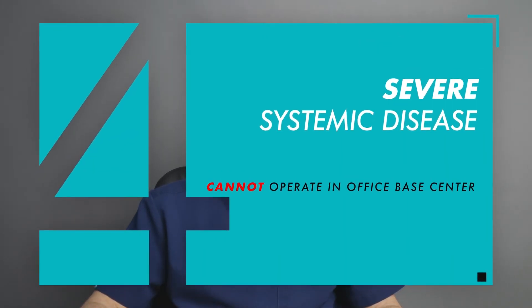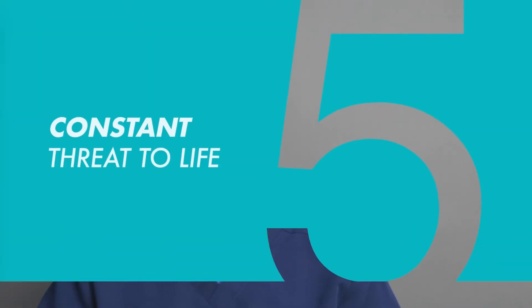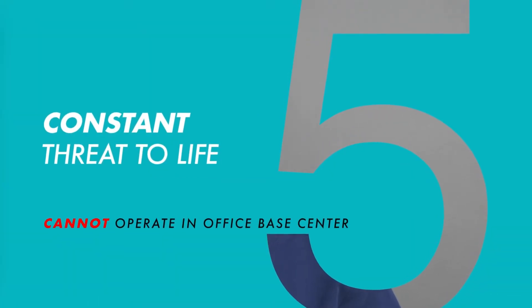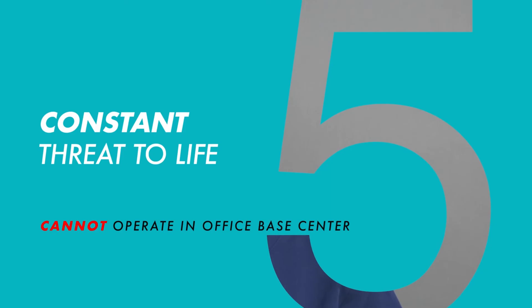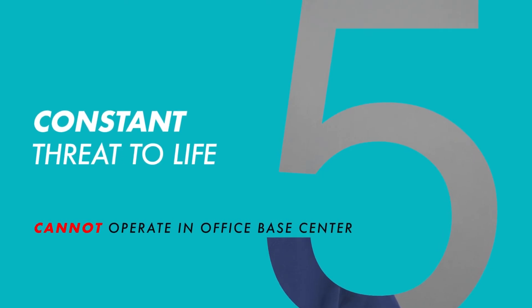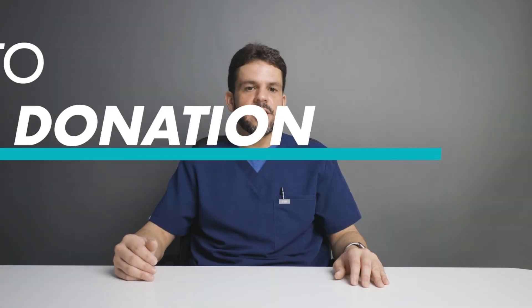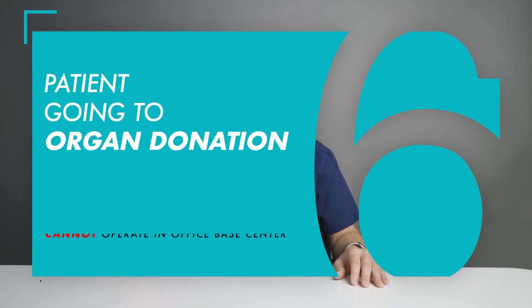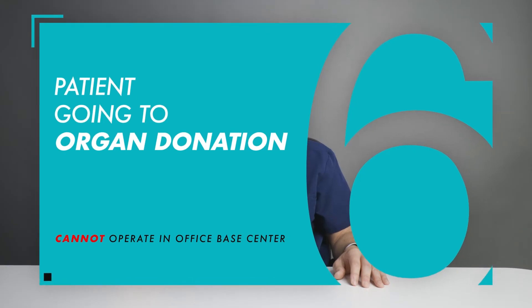An ASA 4 patient is a patient that has a severe systemic disease. An ASA 5 patient is a constant threat to life and won't survive if they don't have a procedure done. ASA 6 is a patient that is going in for organ donation.